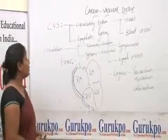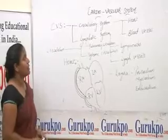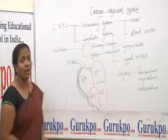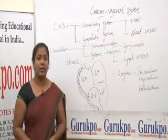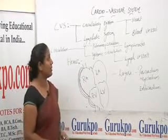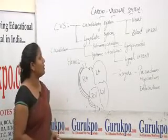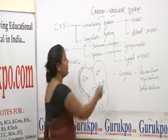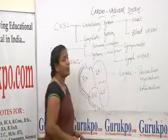The cardiovascular system is divided into two types: the circulatory system and the lymphatic system. The circulatory system includes the heart and blood vessels, and the lymphatic system includes lymph nodes and lymph vessels.